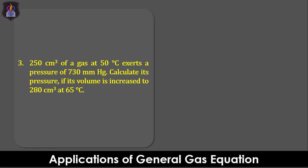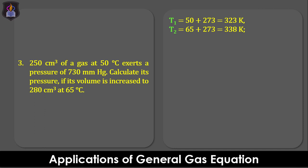Question 3: 250 cm³ of a gas at 50 degrees Celsius exerts a pressure of 730 millimeters of mercury. Calculate its pressure if its volume is increased to 280 cm³ at 65 degrees Celsius. From question 3, the initial and final temperatures T1 and T2 are 50 degrees Celsius and 65 degrees Celsius, equivalent to 323 Kelvin and 338 Kelvin respectively. The initial and final volumes V1 and V2 are 250 cm³ and 280 cm³ respectively. The initial pressure P1 is 730 millimeters of mercury, and we are asked to determine the final pressure P2.